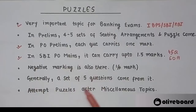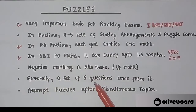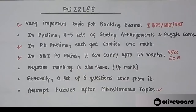Generally a set of 5 questions comes from a single puzzle or sitting arrangement. If the puzzle is easy, there can be 3 questions as well. The next important point is: attempt puzzles after miscellaneous topics. So those are all the important points related to puzzle and your examination, and now we are going to solve a puzzle with 3 variables.